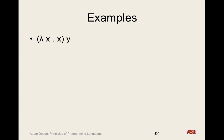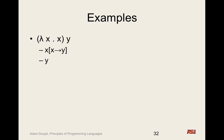Let's look at examples. We have lambda x dot x applied to y. Can we apply a beta reduction? Yes — there's a function on the left being applied to something. The body is x, substitute x with y, and the result is y. Can we do more beta reductions? No, because it's just an identifier — nothing is in the form of a lambda applied to something.